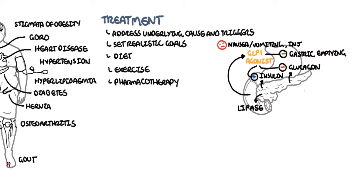Orlistat is another medication that works on the pancreas by inhibiting pancreatic lipase. Lipase is an enzyme that helps break down fat so it can be absorbed by the body. By inhibiting fat absorption, you are essentially preventing fat accumulation. Side effects of Orlistat include gastrointestinal upset and steatorrhea — a fatty stool.